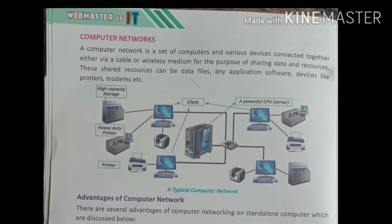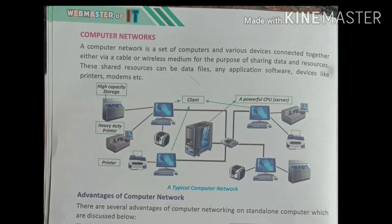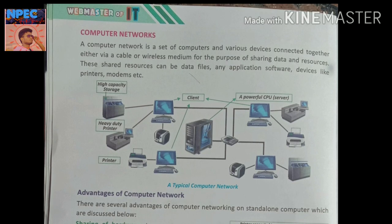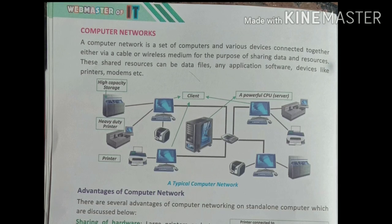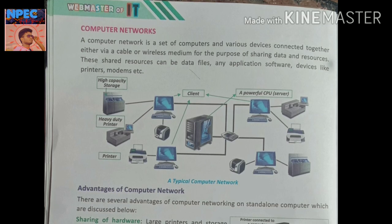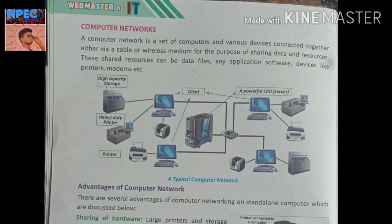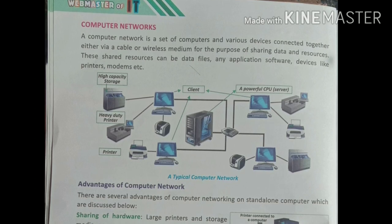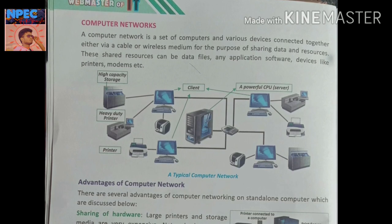तो चलिए next page में देखते हैं — Computer Networks क्या है। अब चलिए computer networks को समझते हैं। एक typical computer network का diagram बनाया हुआ है जिसमें network को समझाया गया है। Diagram में एक CPU है, जिसके through एक router है, उसके through monitor जुड़े हुए हैं — चार monitors। उनके साथ एक-एक printer, scanner, और high capacity storage भी जुड़ा हुआ है।